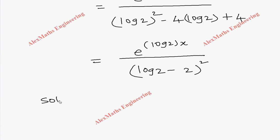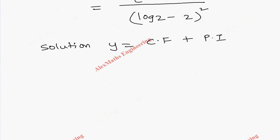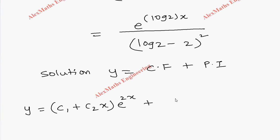Therefore, the complete solution is y = CF + PI. The complementary function is (c₁ + c₂x)·e^(2x) plus the particular integral: e^(log2·x) divided by (log 2 - 2)².